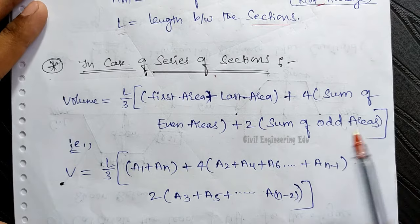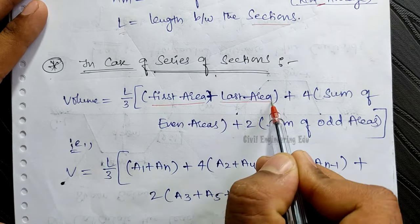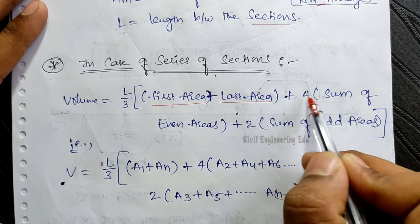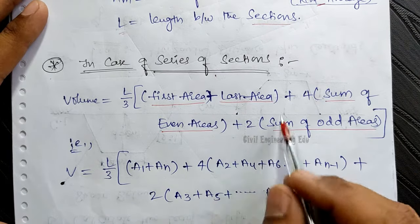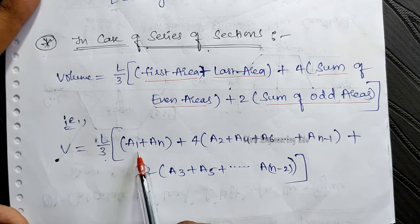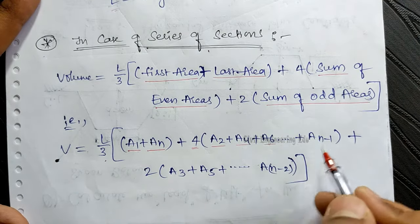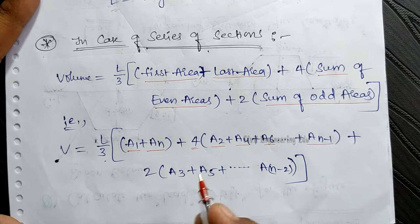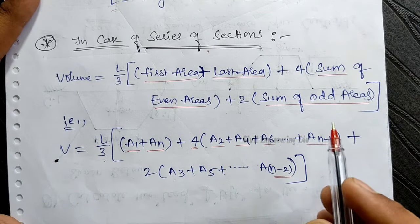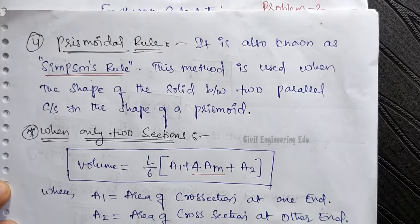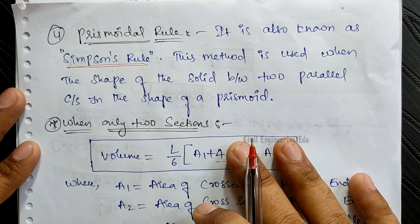For a series of sections using the prismoidal rule, the formula is: Volume = (L/3) × [(A1 + An) + 4×(sum of even areas: A2 + A4 + A6 + … + A(n-1)) + 2×(sum of odd areas: A3 + A5 + … + A(n-2))]. This is the formula used for calculating volume in the prismoidal rule for series of sections. Using all four methods, volumes are calculated according to cross-sectional areas.